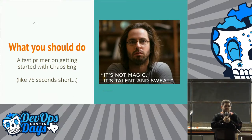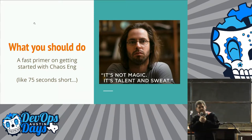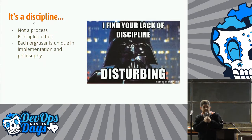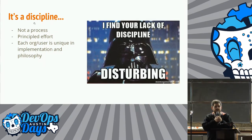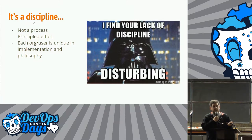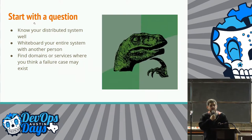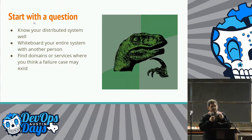So what should you do? It's not magic — it's talent and sweat. Here's a fast primer on how to get started. It's a discipline, first of all — it's not a process. You can't say, oh, if I just throw these things into my pipeline, I have chaos engineering. It's also a principled effort, so you have to be smart about it. And also, the implementation of chaos engineering is super different for every organization.